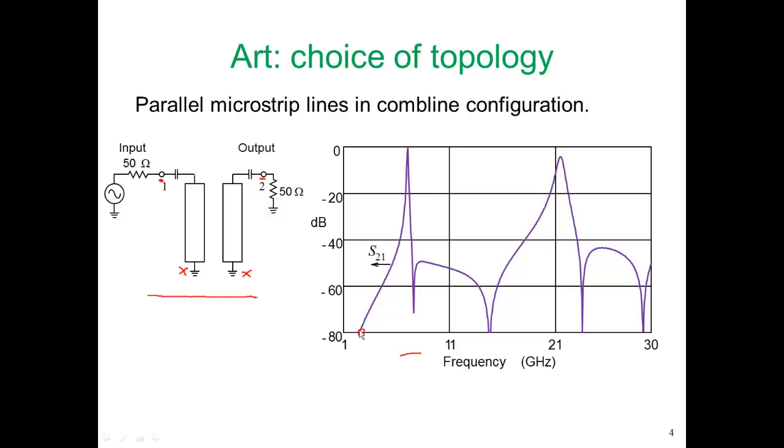That is an 80 dB rejection of our signal. And at the top here, we have a passband, and this passband is incredibly narrow. It's really quite surprising that we can achieve such a great characteristic simply from having a pair of coupled lines.